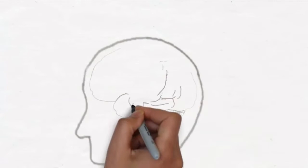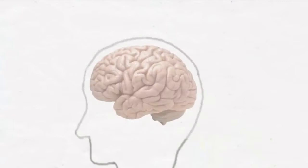This is a brain. Estimates vary, but right now the best guess seems to be that our brains contain around 85 billion neurons. The neuron is a nerve cell, and it's the primary functional unit of the nervous system.